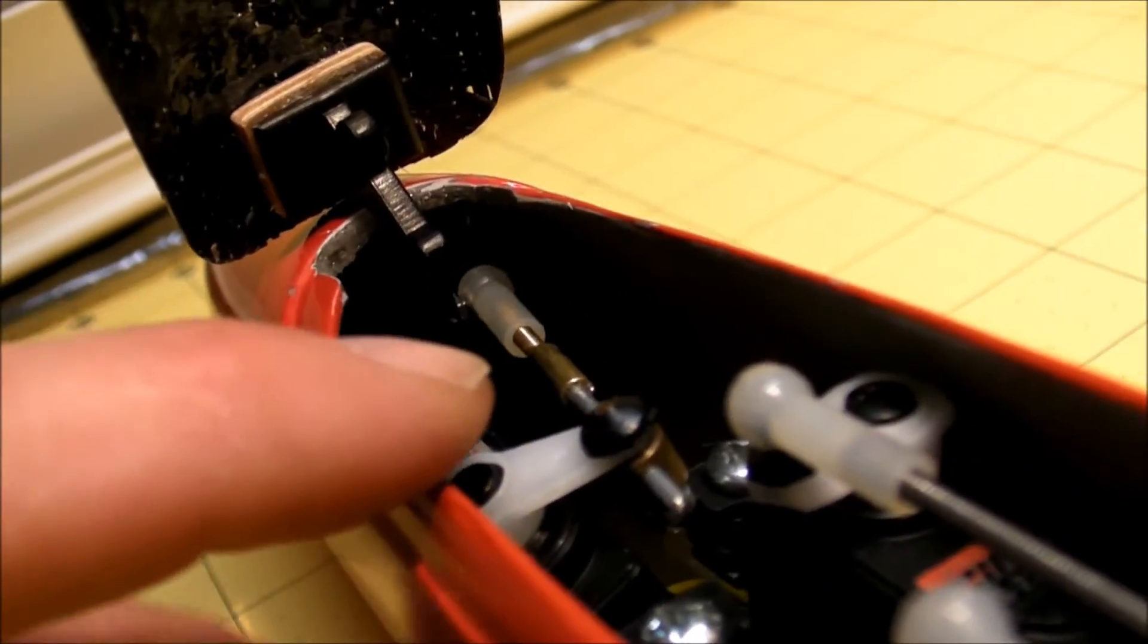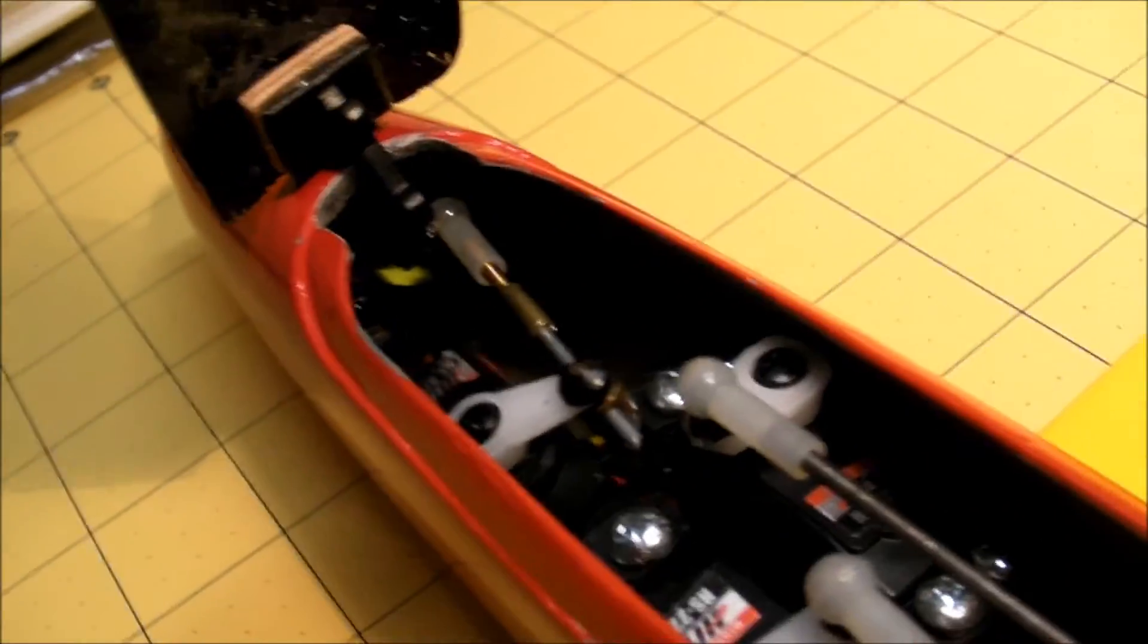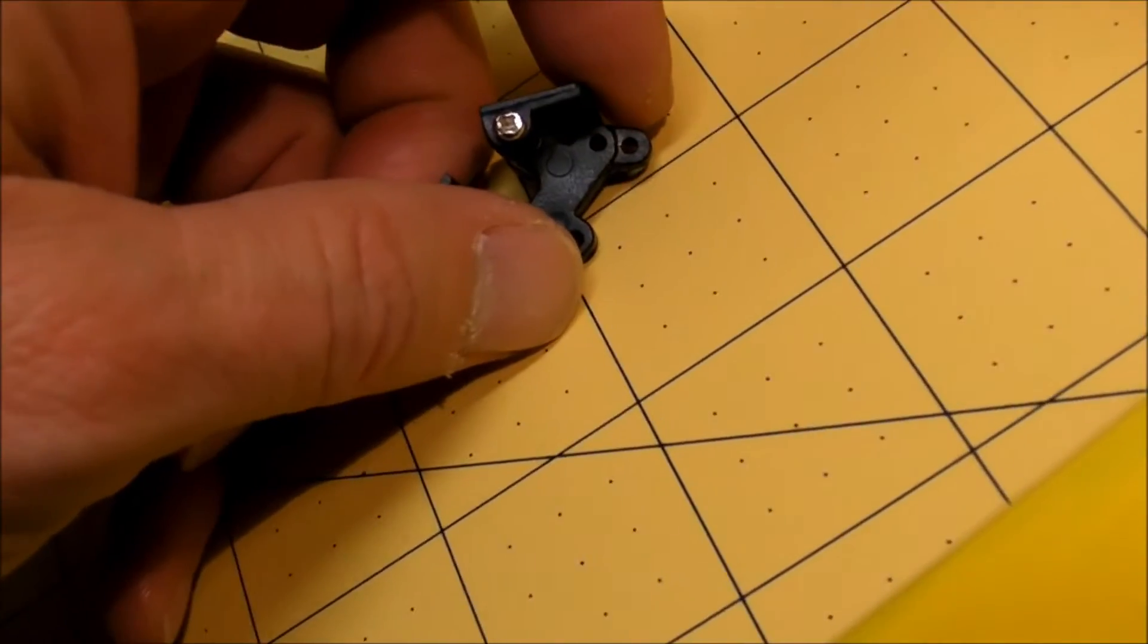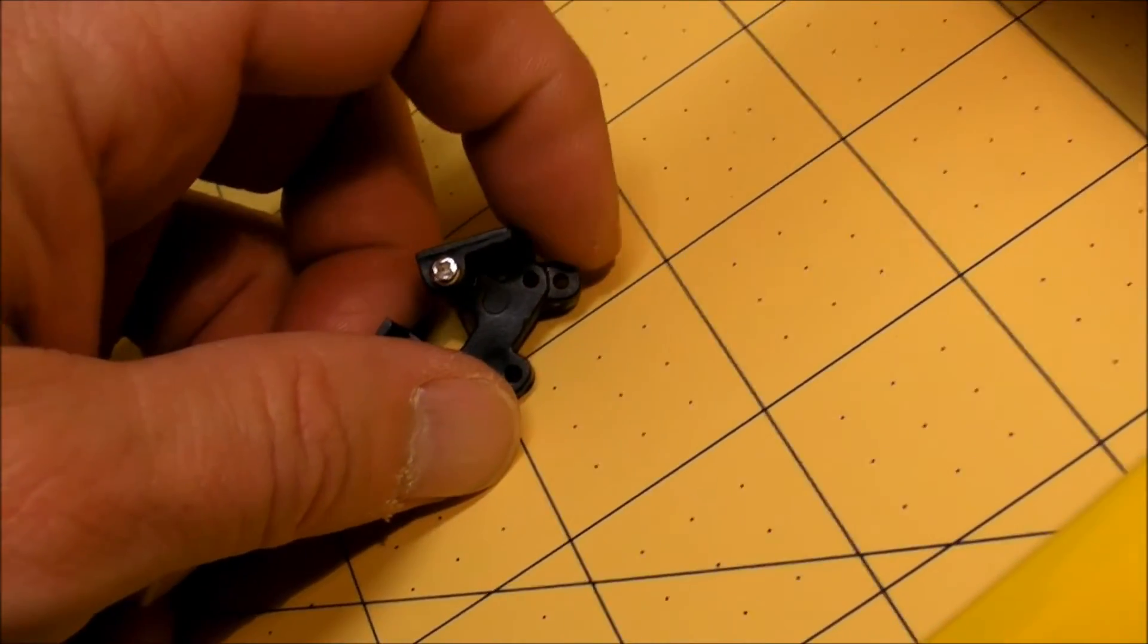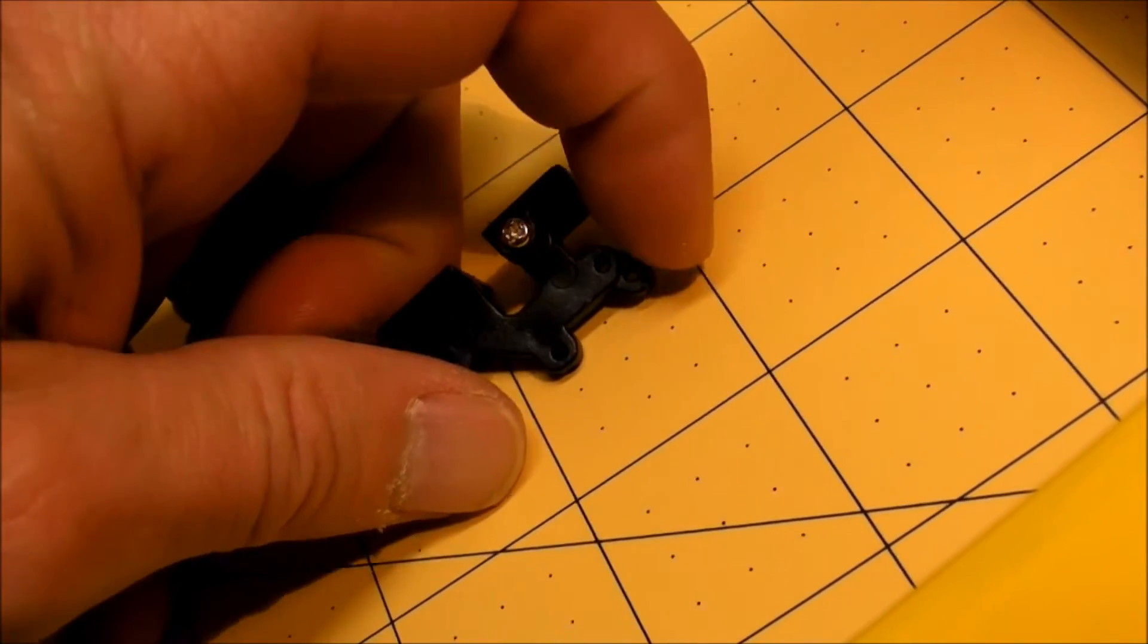Another thing is that I'm not really using very much of the servo throw. Ideally, I should have had this on the inner hole. I had clipped off this last nub here or the mounting hole, going with this, and I forgot that's going to increase the throw.